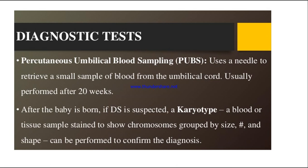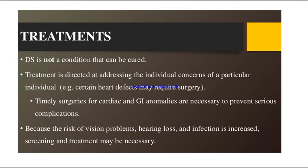After the baby is born, if Down syndrome is suspected, a karyotype test is performed. A blood or tissue sample is stained to show chromosomes grouped by size, number, and shape. In this karyotype testing, we check for chromosome number 21, its size, number, and shape to confirm the diagnosis of Down syndrome.